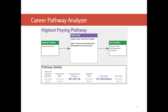Here is our highest paying pathway from that analysis. We can see the starting condition of high school graduate and the exit condition of employed in other management occupations, with an interim education step. Our highest paying interim step is a bachelor's degree in business administration, and for the 35 individuals who traversed this pathway, it resulted in average annual earnings of about $42,000.